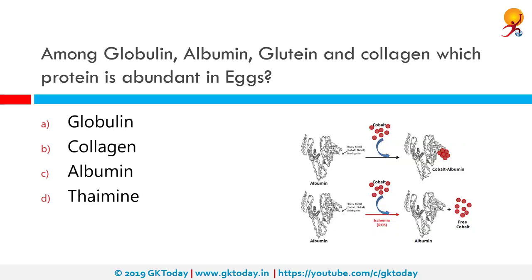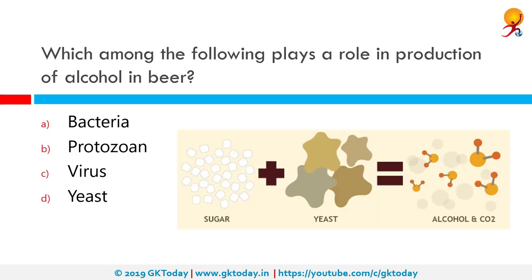Among globulin, albumin, gluten and collagen — which protein is abundant in eggs? The correct answer is albumin. Albumins are a family of globular proteins, the most common of which are the serum albumins. All proteins of the albumin family are water-soluble, moderately soluble in concentrated salt solutions, and experience heat denaturation.